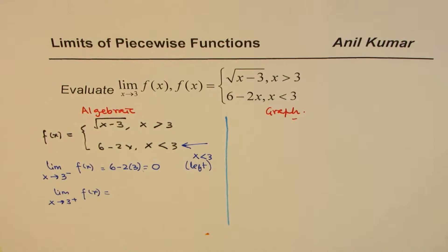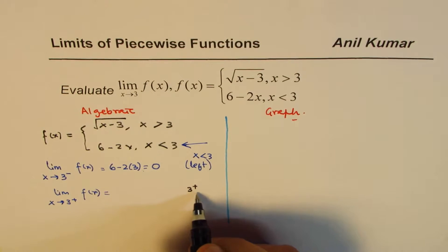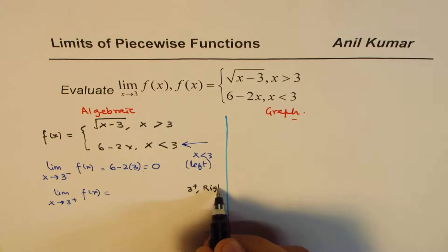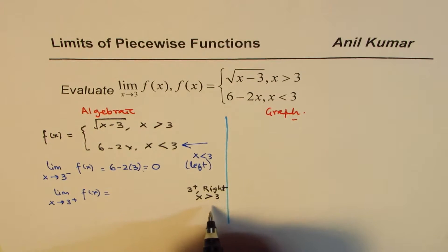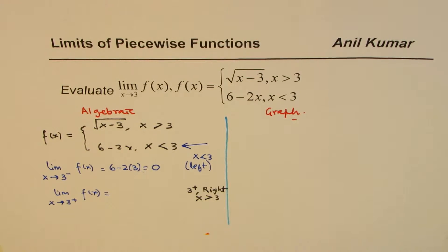Let me change the ink and do the other limit. We want 3 plus. When I say 3 plus, it means from right. It means when x is just greater than 3. The function is not defined at 3, but that does not hold us from finding the limit. Limit is always approaching that point.